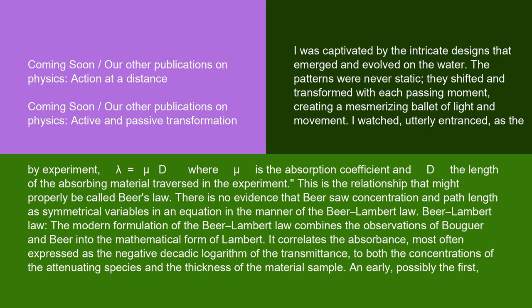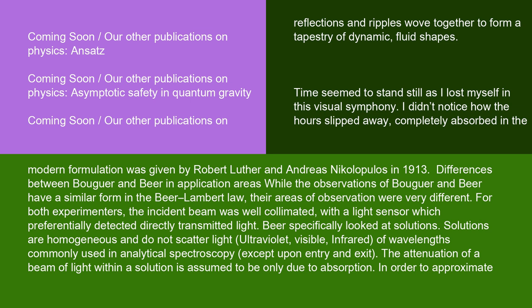The modern formulation of the Beer-Lambert Law combines the observations of Bouguer and Beer into the mathematical form of Lambert. It correlates the absorbance — most often expressed as the negative decadic logarithm of the transmittance — to both the concentrations of the attenuating species and the thickness of the material sample. An early, possibly the first, modern formulation was given by Robert Luther and Andreas Nicolopoulos in 1913.